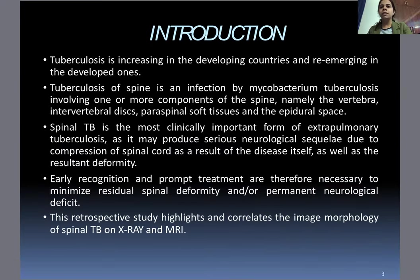Introduction: Tuberculosis is increasing in developing countries and re-emerging in developed ones. Tuberculosis of the spine is an infection caused by Mycobacterium tuberculosis involving one or more components of the spine — namely the vertebra, intervertebral discs, paraspinal soft tissues, and epidural space. It is the most clinically important form of extra-pulmonary TB as it may produce serious neurological sequelae due to compression of the spinal cord. Early recognition and prompt treatment are therefore necessary to minimize residual spinal deformity or permanent neurological deficit.